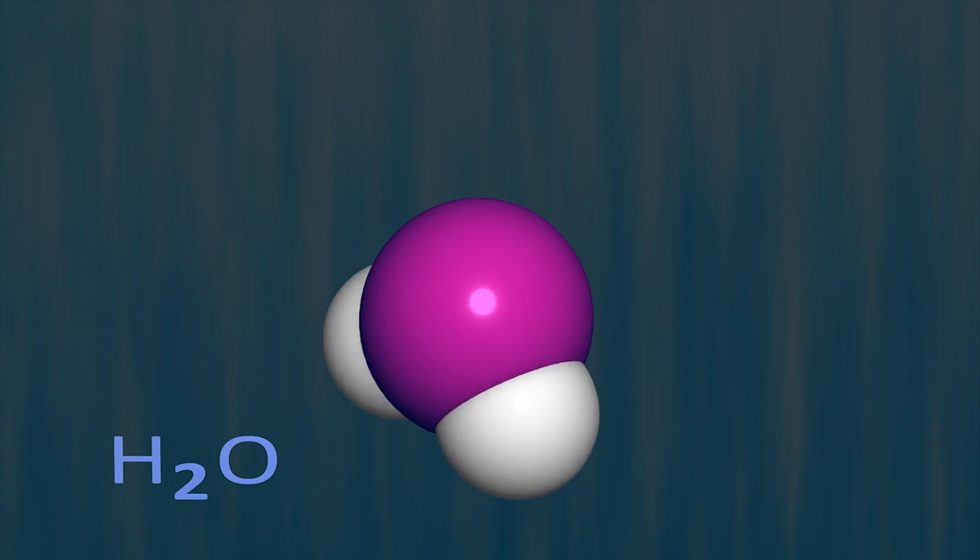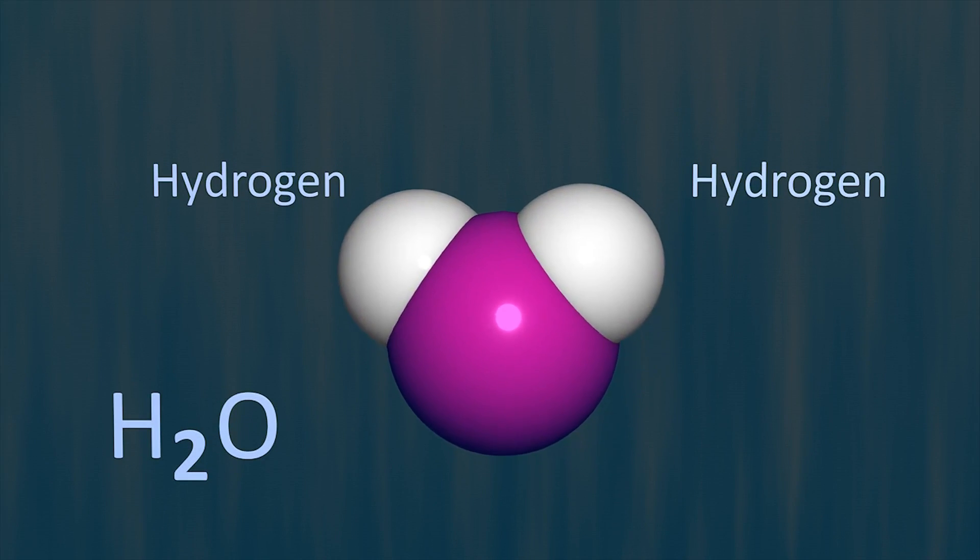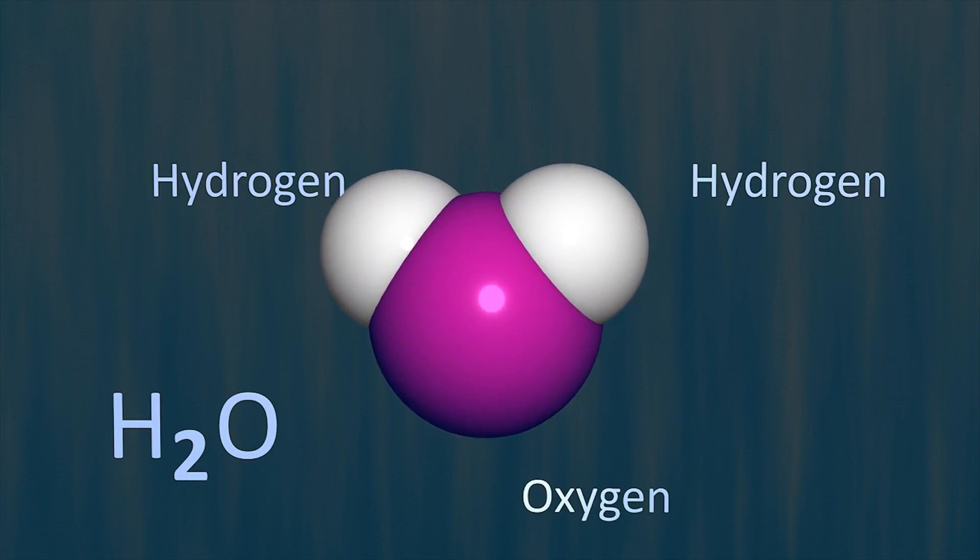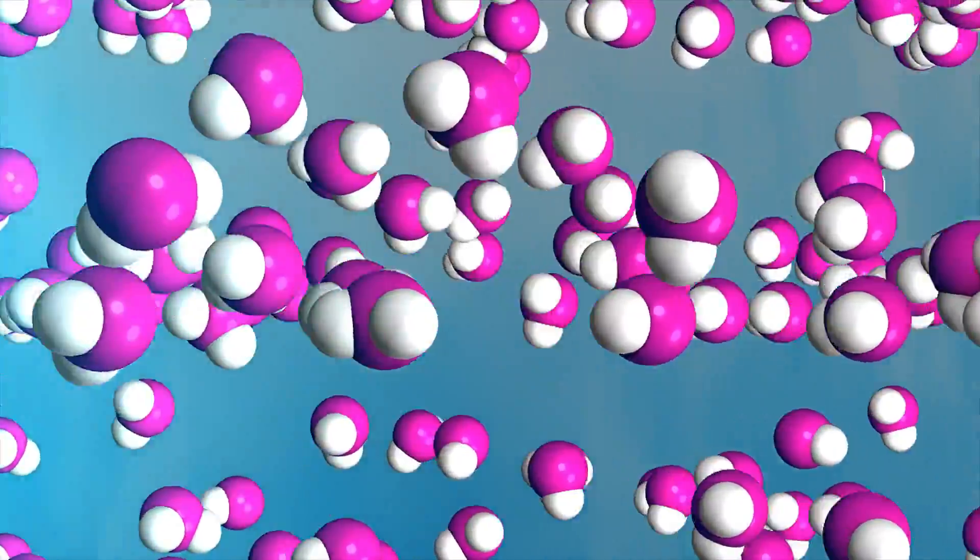However, hydrogen is not the only interstellar element that can form Rydberg baryonic dark matter. Oxygen, second only to hydrogen in abundance and chemical reactivity, readily combines with hydrogen to form water molecules.